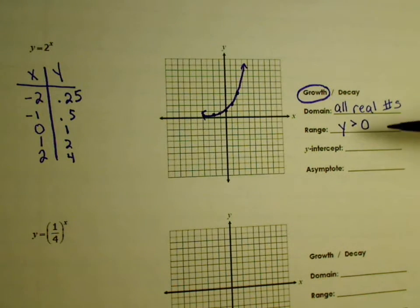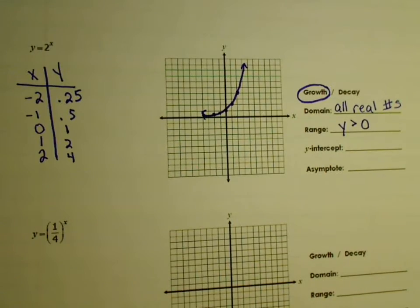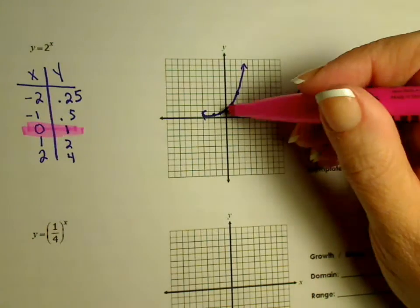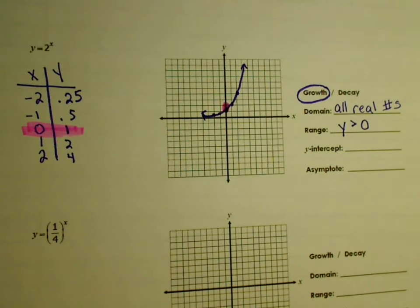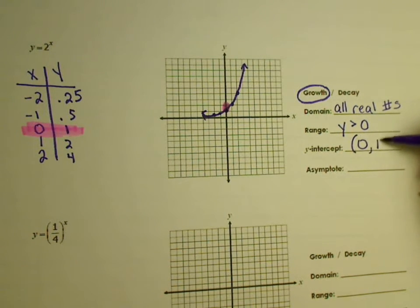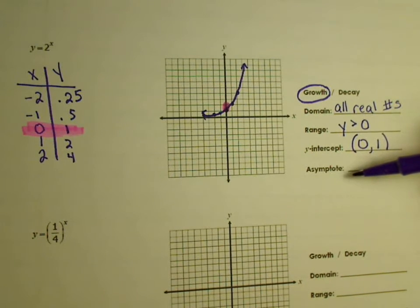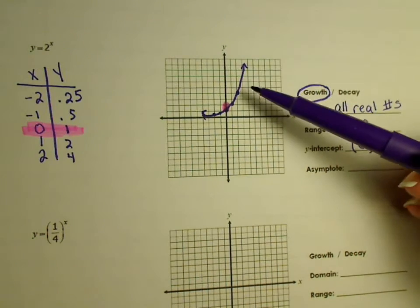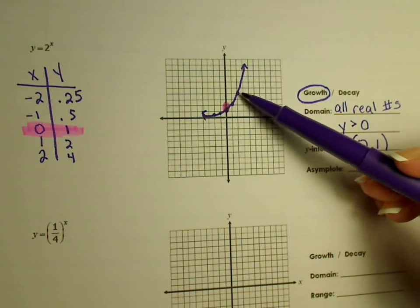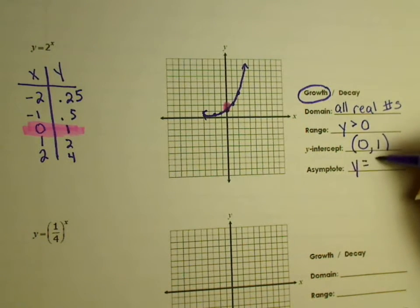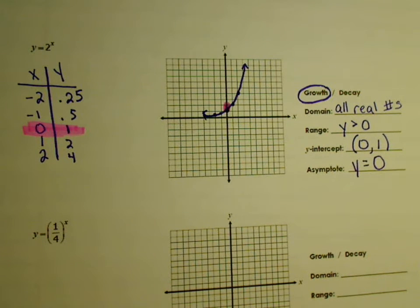Your y-intercept is wherever x is 0. If you look over here it'll tell you, or you can just look at the graph — it is at 1, so it's an ordered pair of (0, 1). And the last thing is the asymptote. The asymptote is basically what line does this curve approach but never touch. That would be at 0, so you put y equals 0.